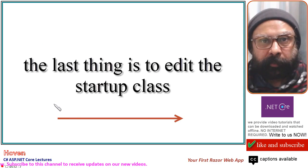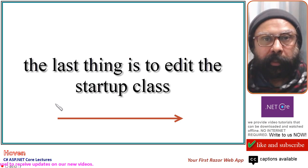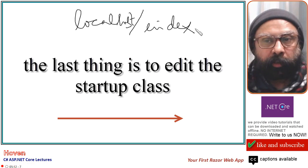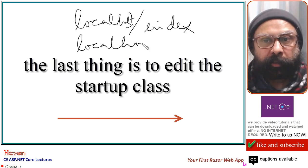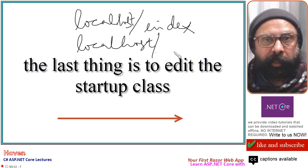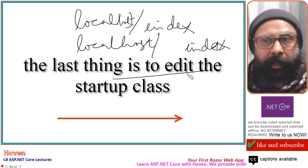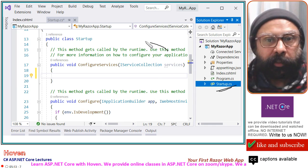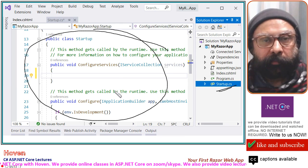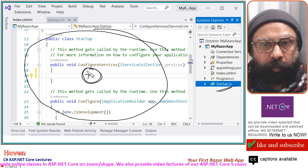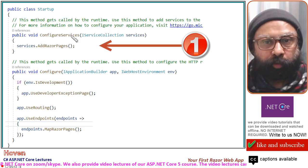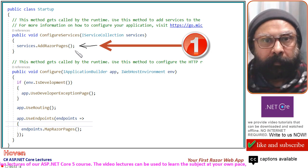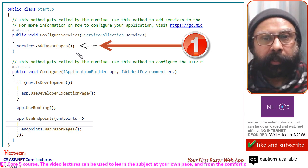The last thing is to edit the startup class. We have to tell ASP.NET Core that requests for the index home page — that is, localhost/index or simply localhost/ — should reach our Razor page called Index. Open the startup.cs file. You will see code already created by the Visual Studio default template. We will add one statement here: services.AddRazorPages(). This adds the additional services required for Razor pages.